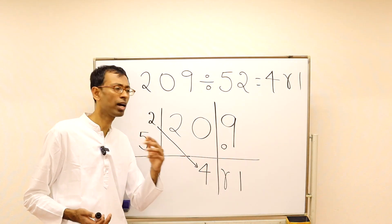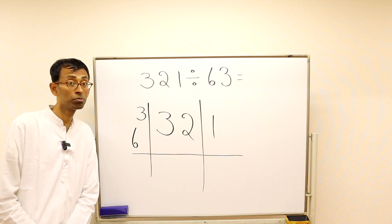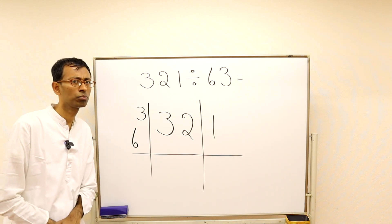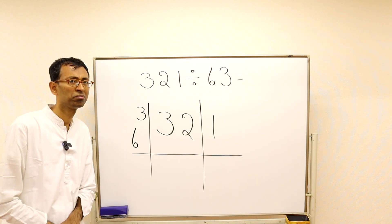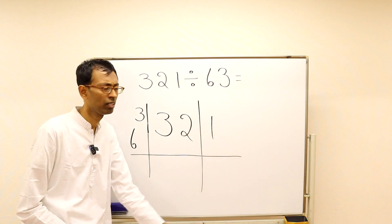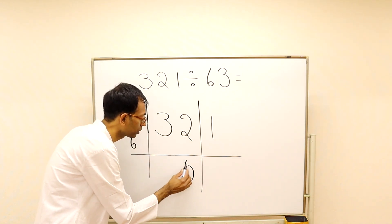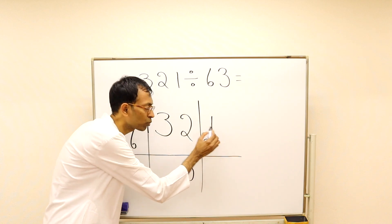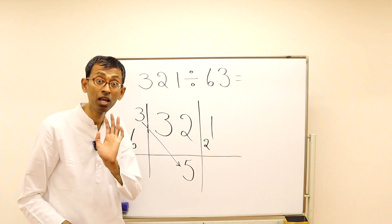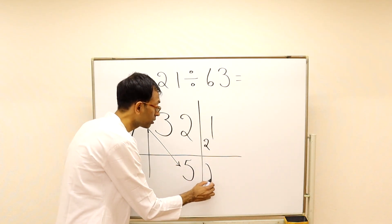Pause the video and tell me the answer for this next problem — I've set it up nicely. The answer comes in three steps: division, multiplication, subtraction. Division: 32 divided by 6 is 5, remainder 2. We put 5 in the answer and make the remainder 21. Multiplication: flag digit 3 times 5 is 15. Subtraction: 21 minus 15 equals 6. So the remainder is 6.